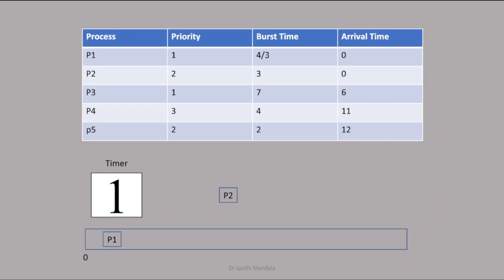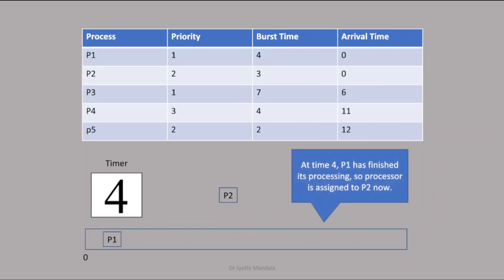P1 requires 4 seconds. We executed 1 second at timer 1 — no process is arriving, so we continue. At 2 seconds, no process arrived. At 3 seconds, no process is arriving. We execute all 4 seconds. At time 4, P1 has finished its process and the processor is now assigned to P2 because no other process is present.